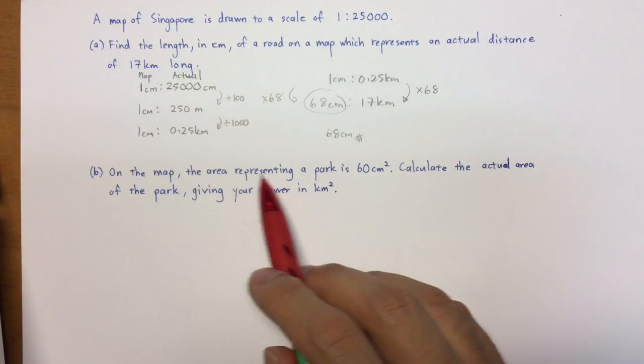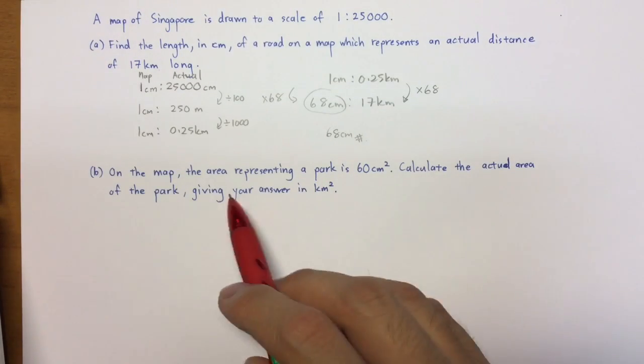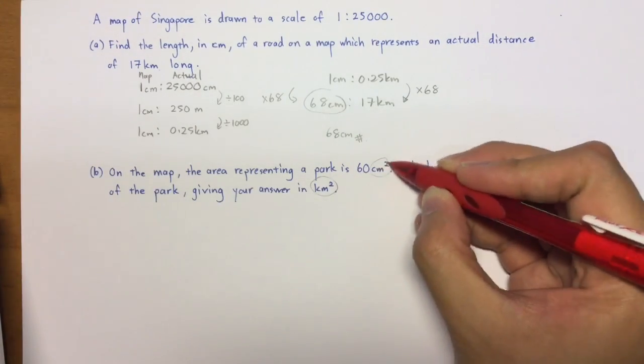On the map, the area representing a park is 60 cm². Calculate the actual area of the park giving your answer in km². So now you notice that we're talking about km² and cm².